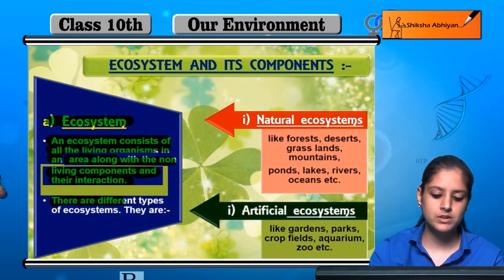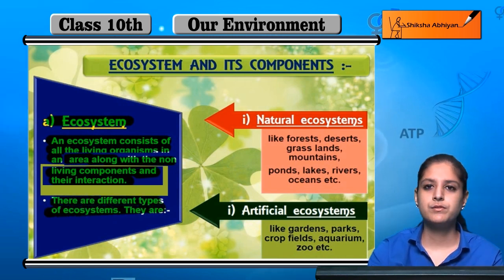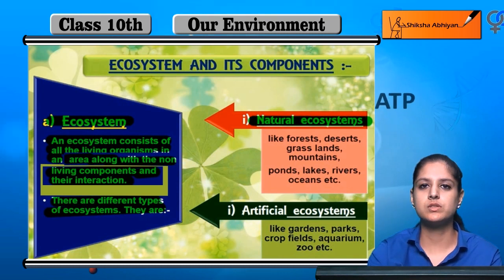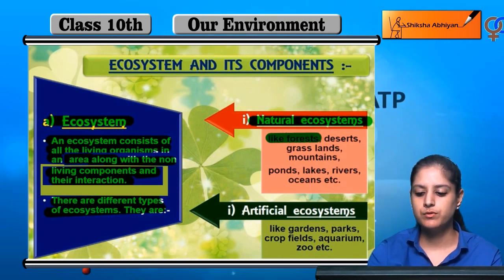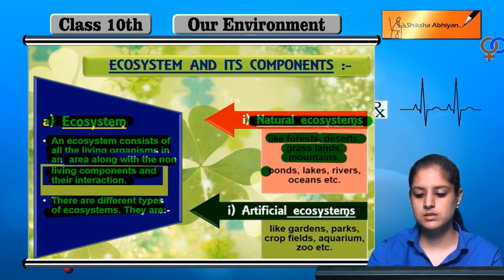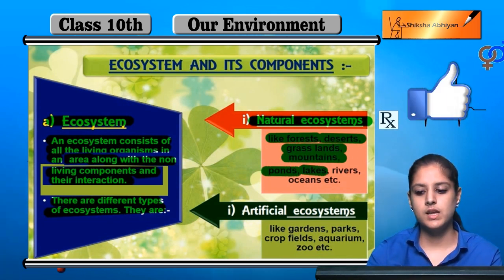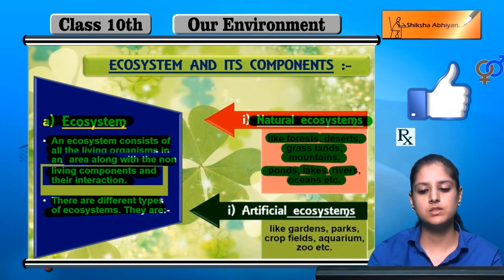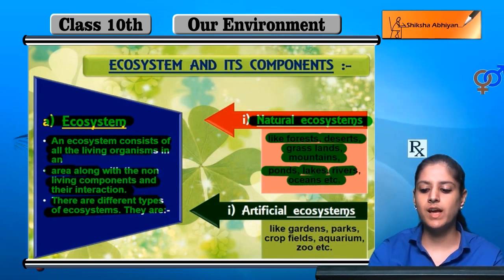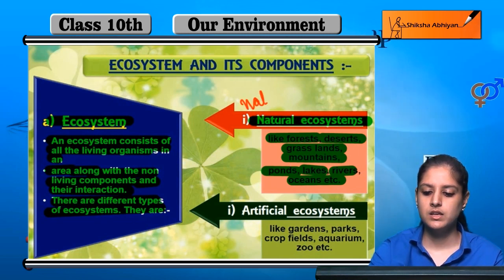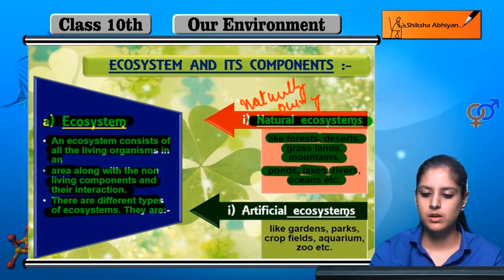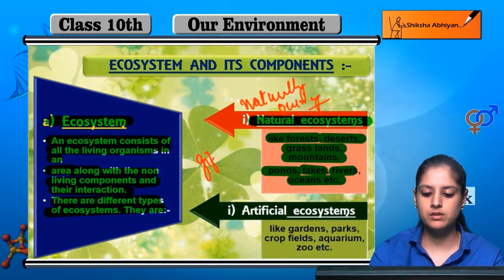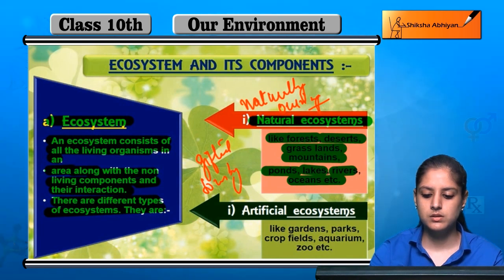Ecosystems are of different types. The first type is the natural ecosystem. For example: forests, deserts, grasslands, mountains, ponds, lakes, rivers, oceans, etc. They are called natural ecosystems because they are naturally occurring — gifted to us by nature.